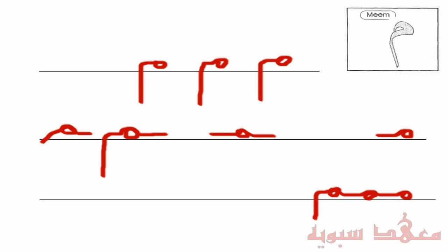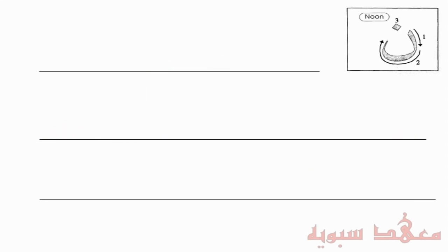Next letter: the Noon. Now, the Noon is a bit different from the Ba, the Ta, and the Tha, in that in the isolated form it doesn't stay on the line — it goes below the line.